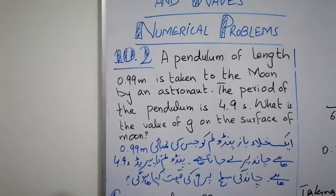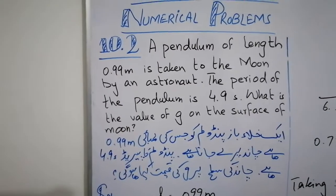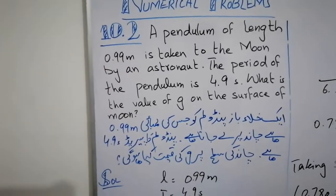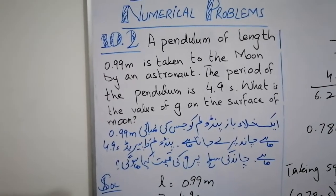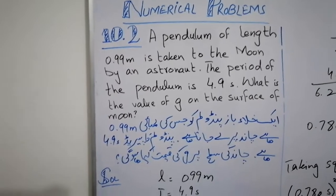After that, the next thing we have given is that the period of the pendulum is 4.9 seconds. The time period which we represent as T is 4.9 seconds. After that, we have to find what is the value of g on the surface of the moon. That means we have to find gravity of the moon, g_m's value.